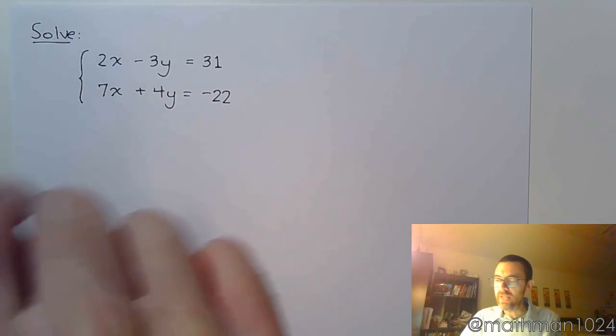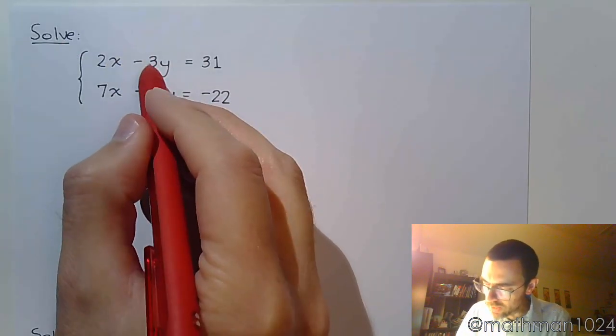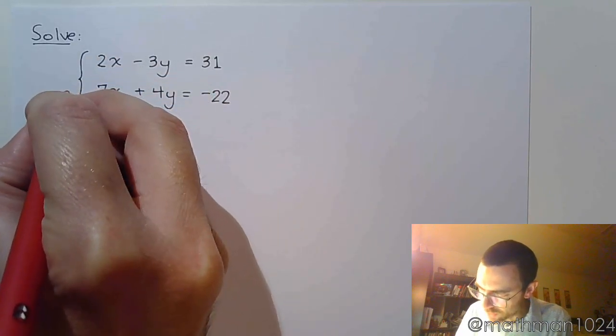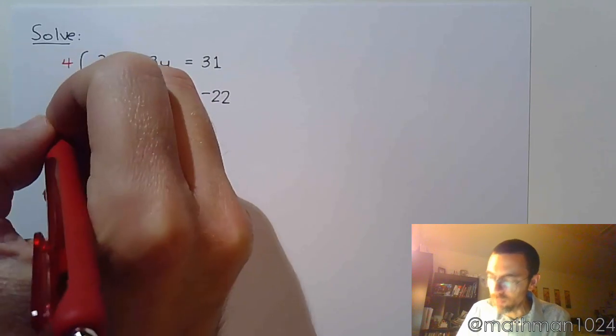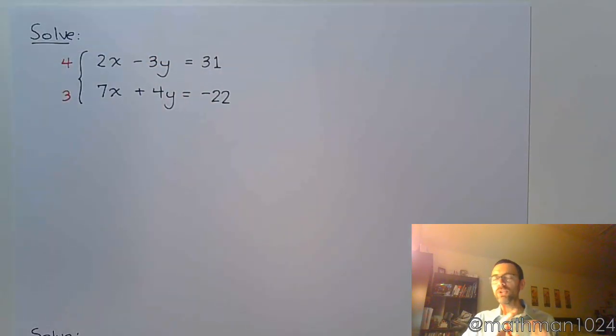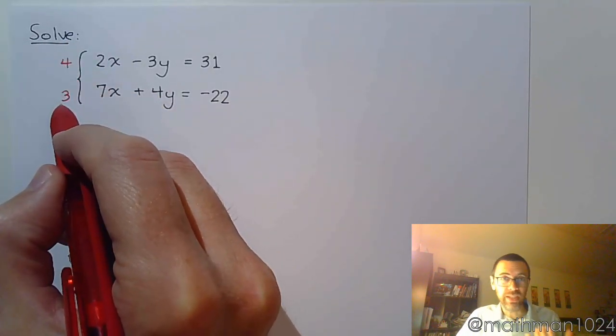Another way is to just take these coefficients and crisscross them, which means I'm going to take this 3 and multiply the bottom equation by 3 and take the 4 and multiply the top equation by 4. This kind of goes back to like a super cheap easy way of getting a common denominator, not necessarily the least common denominator but a common denominator nonetheless. Now if you look at 4 and 3 they don't have a common factor so this is really as low as you can get.